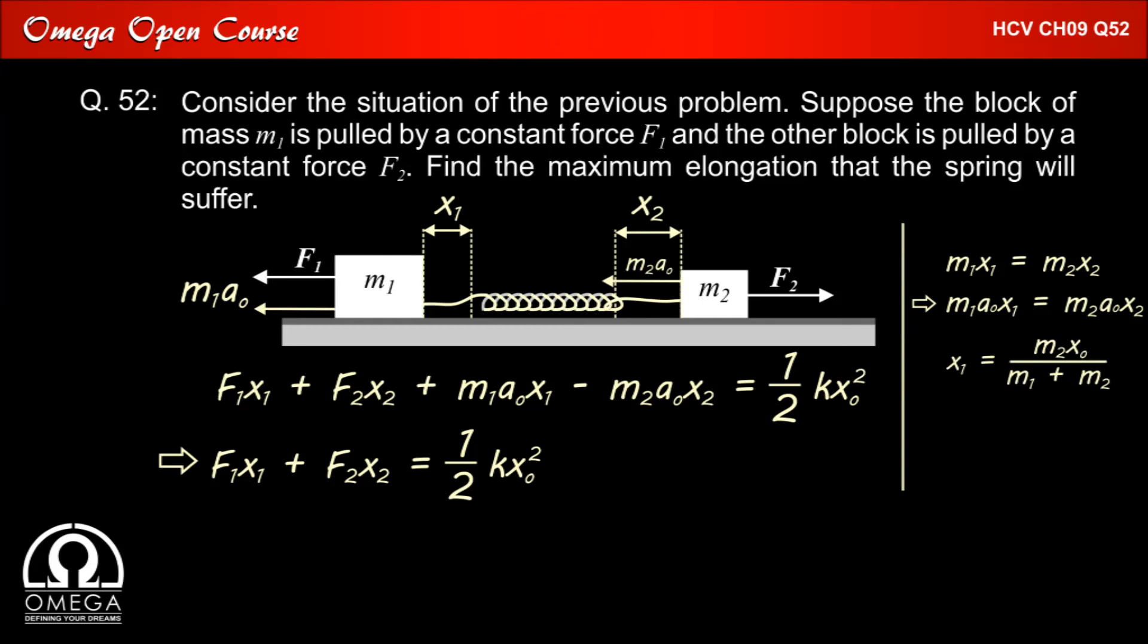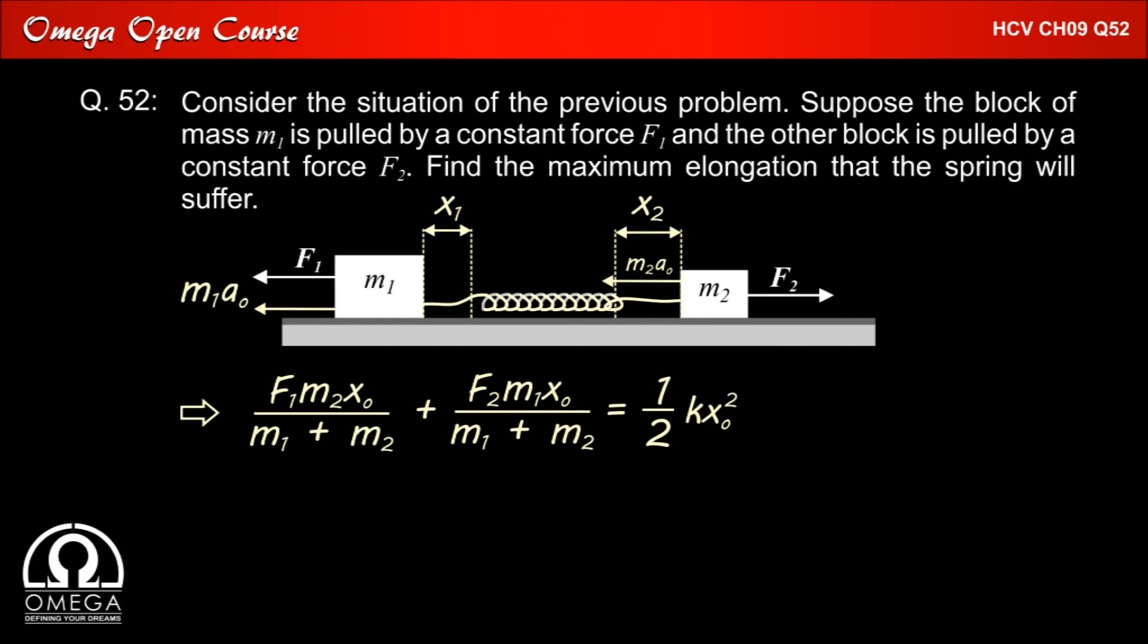Also we have calculated x1 to be M2 x0 divided by M1 plus M2 and x2 as M1 x0 divided by M1 plus M2. Putting these values in the expression we get F1 M2 x0 divided by M1 plus M2 plus F2 M1 x0 divided by M1 plus M2 is equal to half K x0 whole square.